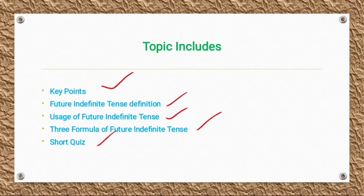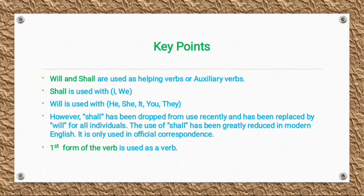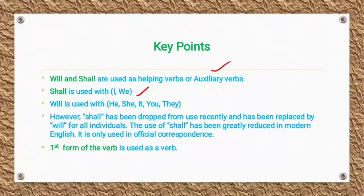Let's get started. Key points: 'will' and 'shall' are used as helping verbs, also called auxiliary verbs. 'Shall' is used with the subjects 'I' and 'we', while 'will' is used with 'he', 'she', 'it', 'you', and 'they'.